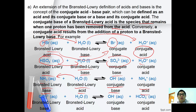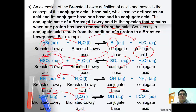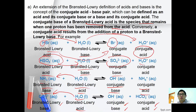Finally, for CO32- plus H2O giving OH- and HCO3-, water here acts as a proton donor, so water acts as a Bronsted-Lowry acid, while CO32- acts as a Bronsted-Lowry base. Upon donating the proton, OH- remains and is called the conjugate base, whereas HCO3- is called the conjugate acid.